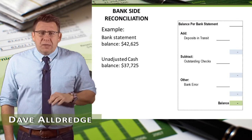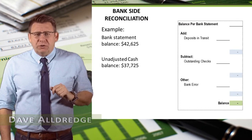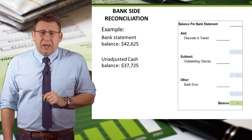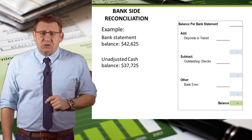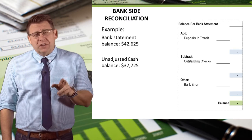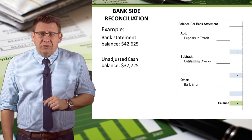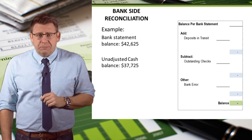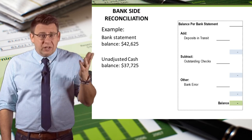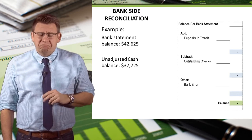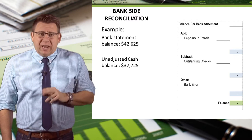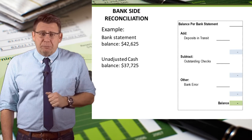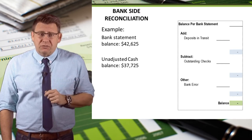Let's look at this example. The bank statement balance is $42,625, and the unadjusted cash account balance, which we get from the unadjusted trial balance, is $37,725. Because of timing differences, these balances will be different. Looking at the two, can you tell which one is correct? No, actually you can't — and in fact that was a trick question, because it's likely that our actual cash balance is something different than either of those numbers.